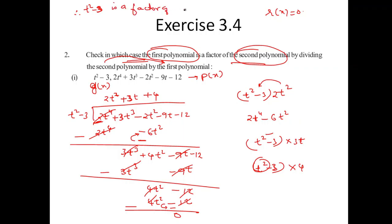Since R of X equals zero, I can say clearly that t² minus 3 is a factor of the polynomial 2t⁴ plus 3t³ minus 2t² minus 9t minus 12, which is equivalent to zero.